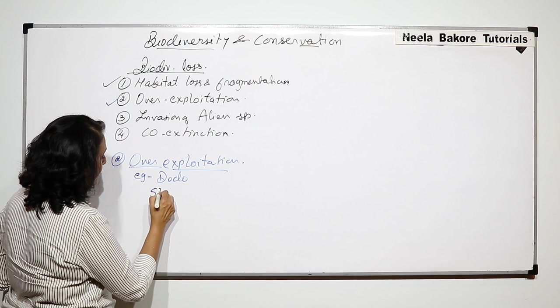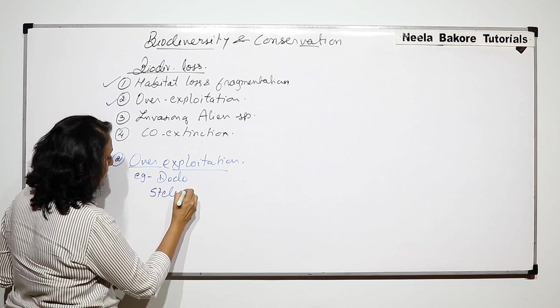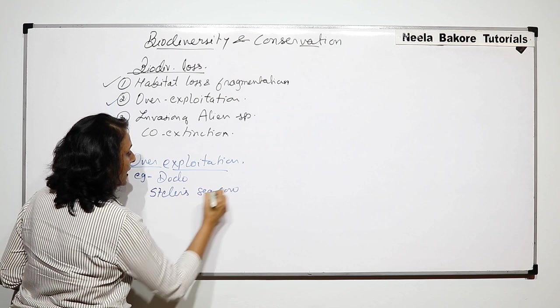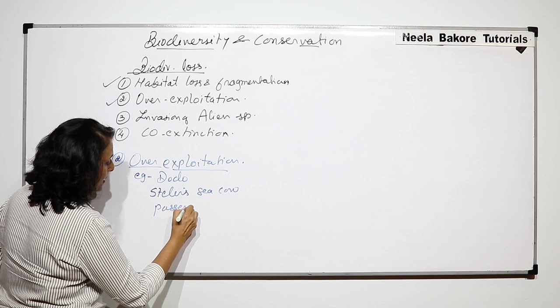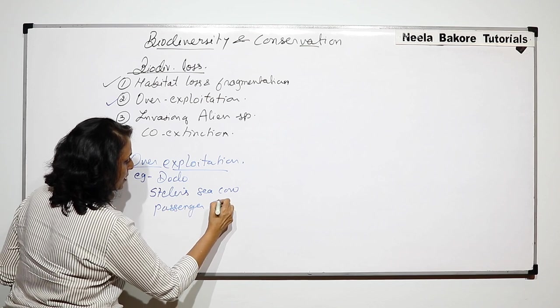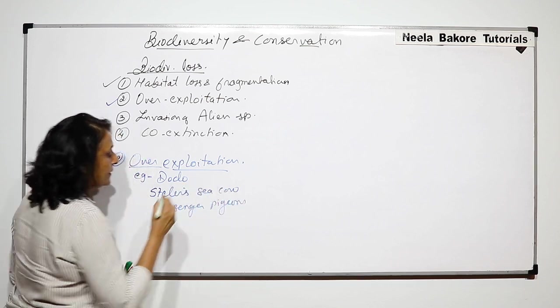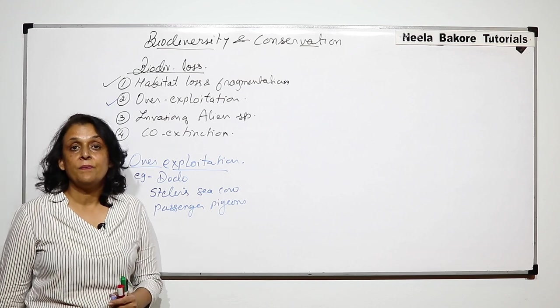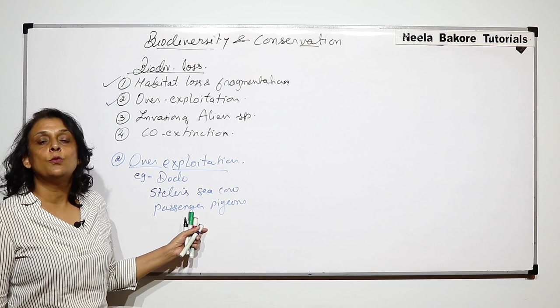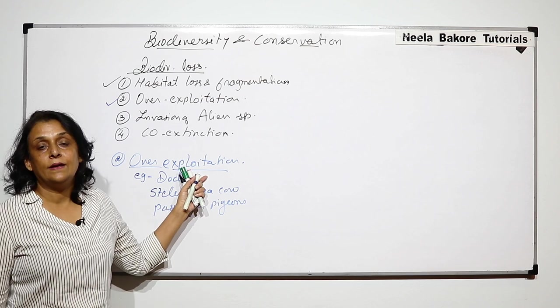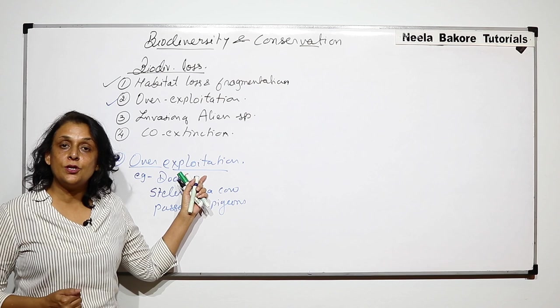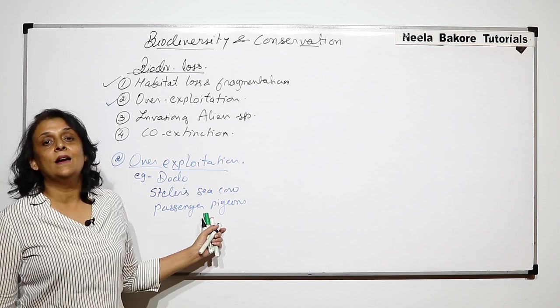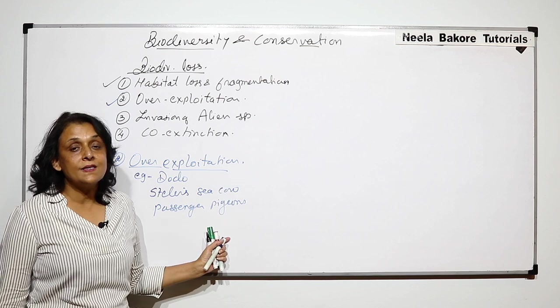Another example is Steller's sea cow and passenger pigeon. These are three animals which got extinct in the recent past, and in every case it was more than needed exploitation. When need becomes greed, it ultimately results in this condition.